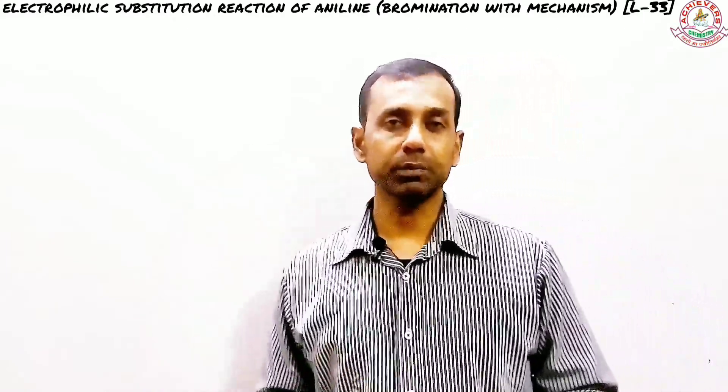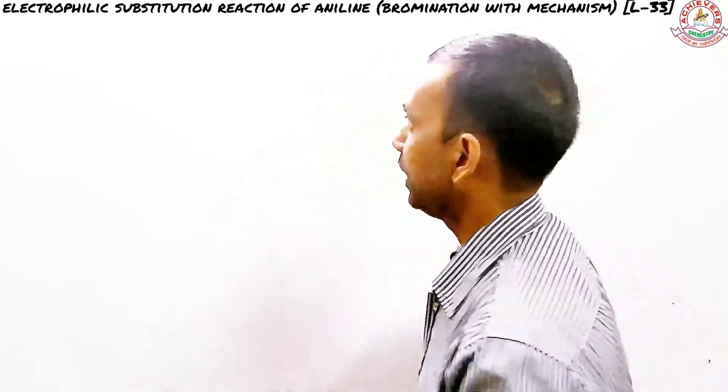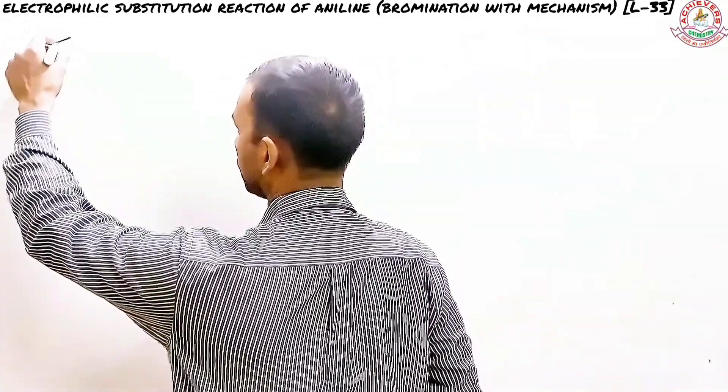Today's topic is electrophilic substitution reactions of aniline. We will be carrying out some electrophilic substitution reactions on aniline. The first one I'll be covering is the bromination of aniline. This is going to be a bit interesting because it has some parts that might be a bit twisted, but that twist is going to be useful and interesting.